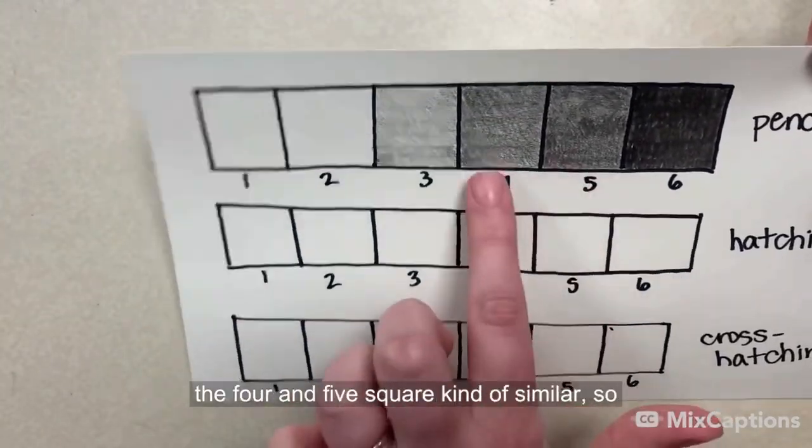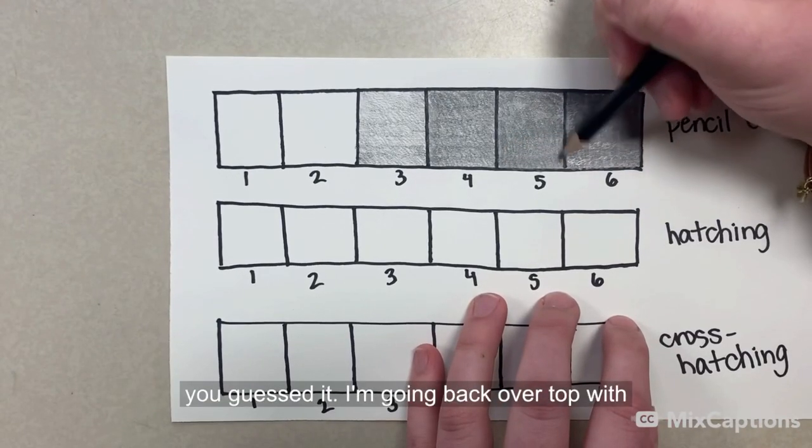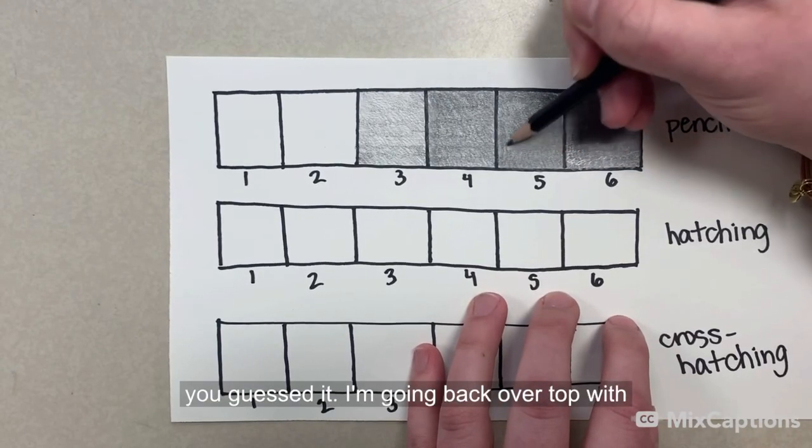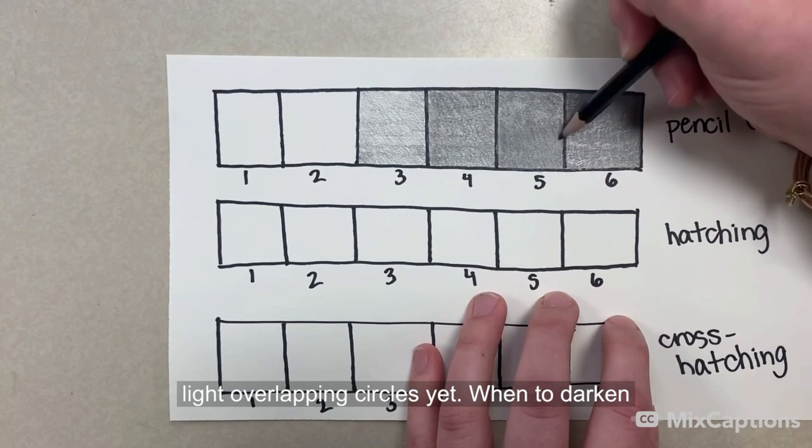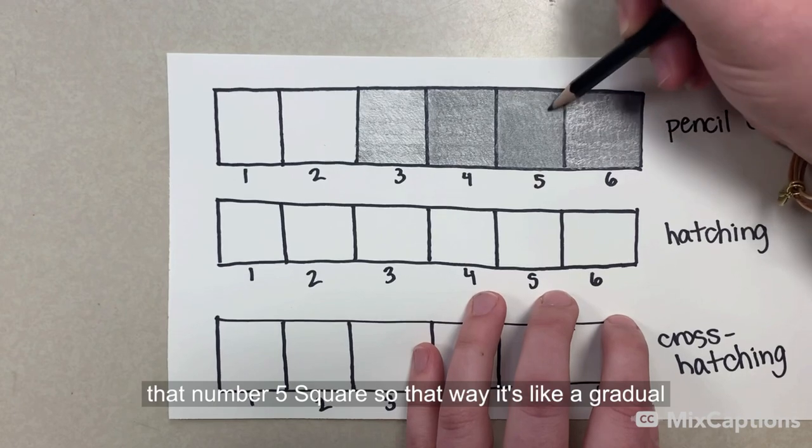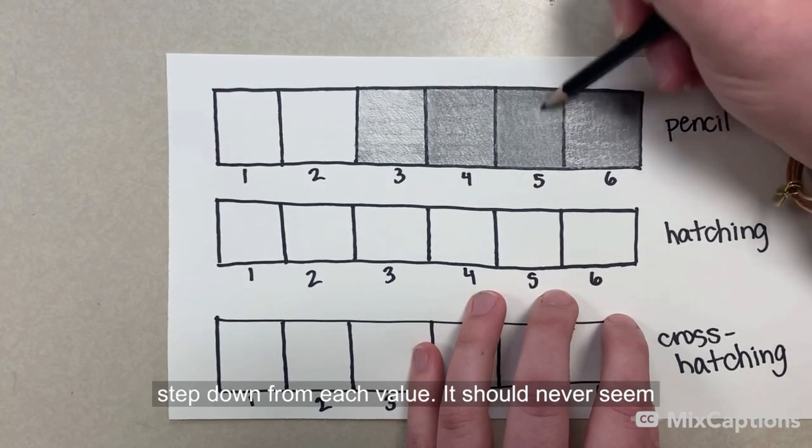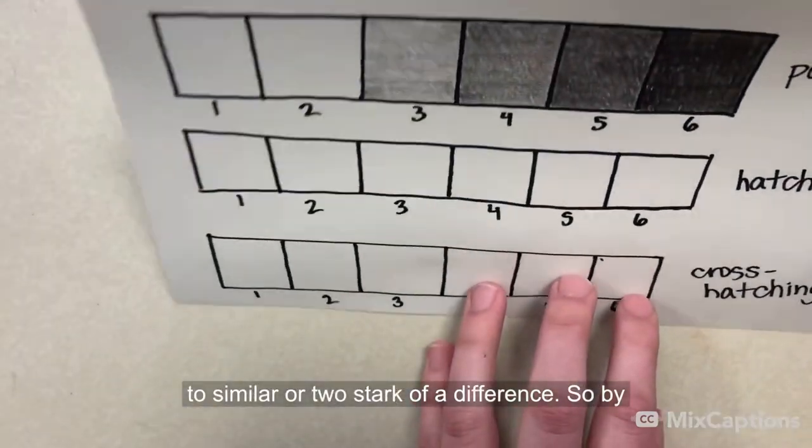But by doing that, I now realize the four and five square are kind of similar. So you guessed it, I'm going back over top with light overlapping circles yet again to darken that number five square. So that way it's like a gradual step down from each value. It should never seem too similar or too stark of a difference.